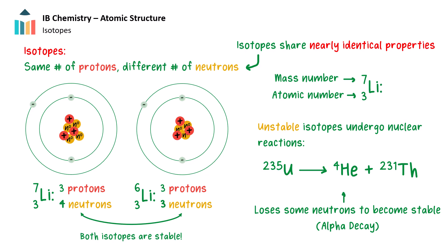Atoms of an element always have the same atomic number, but they may have different mass numbers due to the variation in the number of neutrons. Several neutron numbers are possible because there can be multiple stable arrangements of protons and neutrons in which the electrostatic repulsion between protons is counterbalanced by the strong nuclear force between nucleons. Atoms with the same atomic number but different mass numbers are called isotopes. An isotope of an element can be represented as a letter symbol with a superscript and a subscript to the left of the letter symbol: the letter symbol represents the element, the subscript shows the atomic number, and the superscript the mass number. Because isotopes contain the same number of protons, the electrostatic attraction between the protons and electrons does not vary. Thus, isotopes form bonds with very similar bond energies, producing materials with nearly identical physical properties.